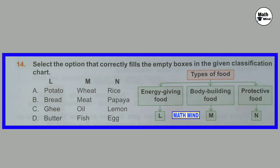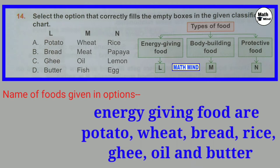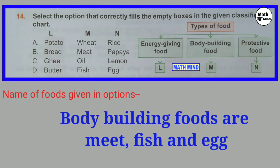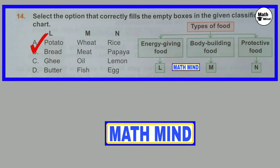Question number 14: Select the option that correctly fills the empty boxes in the given classification chart. The chart is about type of food. L is energy-giving food, M is body-building food, and N is protective food. Energy-giving foods are potato, bread, wheat, rice, ghee, oil and water. Body-building foods are meat, fish and egg. Protective foods are papaya and melon. So correct option is B: L is bread (energy-giving food), M is meat (body-building food), N is papaya (protective food).